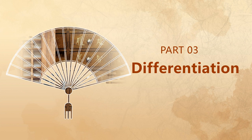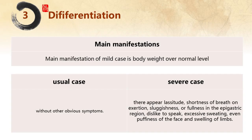Syndrome differentiation and treatment is the basis of TCM treatment. Main manifestations of mild cases include body weight over normal level without other symptoms. In severe cases, there appear lassitude, shortness of breath on exertion, sluggishness, fullness in the epigastric region, dislike to speak, excessive sweating, and even puffiness of the face or swelling of the limbs.